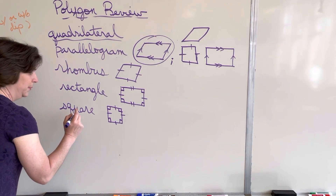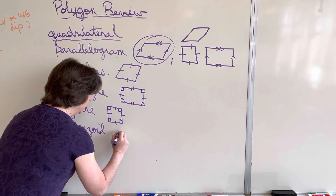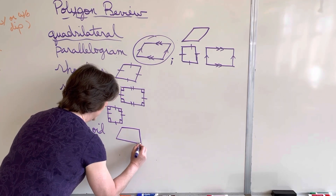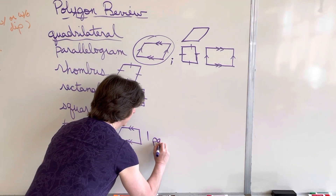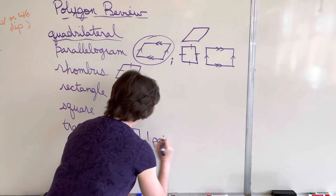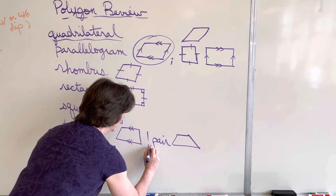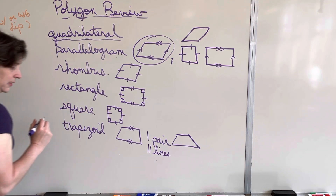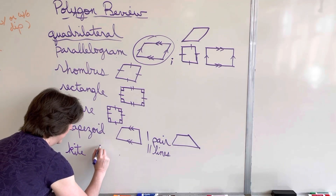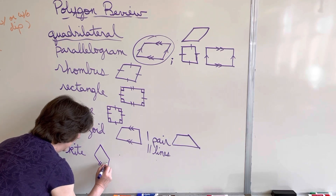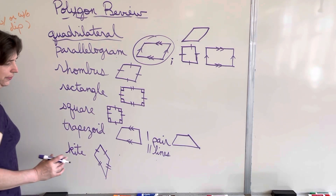Two more quadrilaterals: the trapezoid and the kite. The trapezoid is special because it only has one pair of parallel lines — just one pair — so it is not a parallelogram. It can look like a standard trapezoid or a different orientation. My last quadrilateral is a kite, which looks like a kite you would fly. A kite has adjacent sides that are congruent: these two next-door neighbors are congruent, and the other two longer sides are congruent.